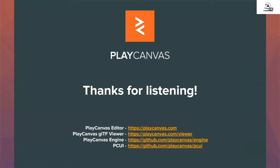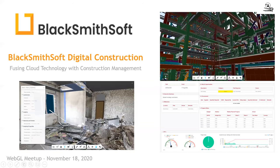Up next is Rami Santina from Blacksmith Soft. Rami talks about construction. A recent study shows that construction lags behind the total economy in labor productivity growth, and raising productivity to the economy average represents a $1.6 trillion opportunity. Blacksmith Soft is built by construction experts for the construction industry, understanding that the industry is conservative and buying into new technology is hard. Their strategy is modular — no need to transition all operations from day one — and customizable to each company's operational workflow, since all construction companies are not alike.